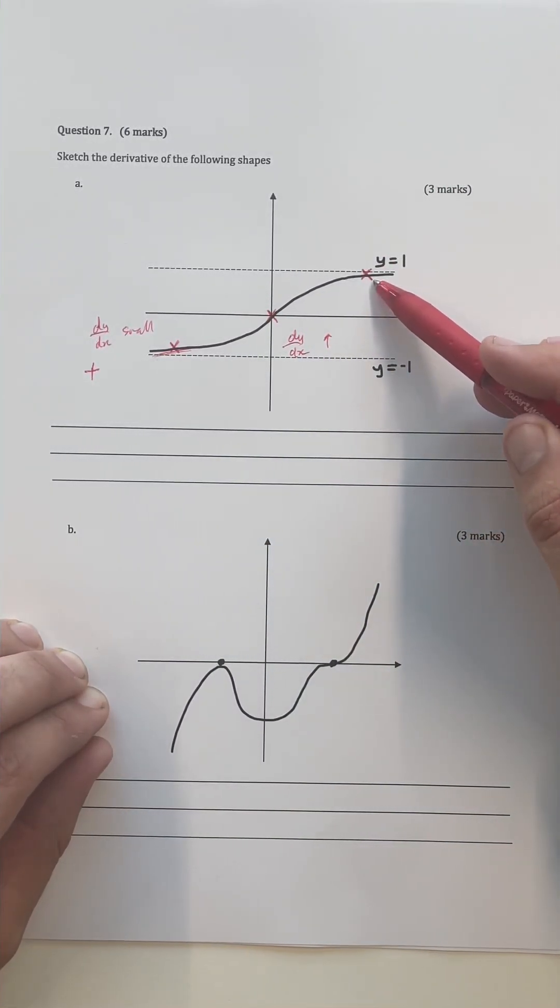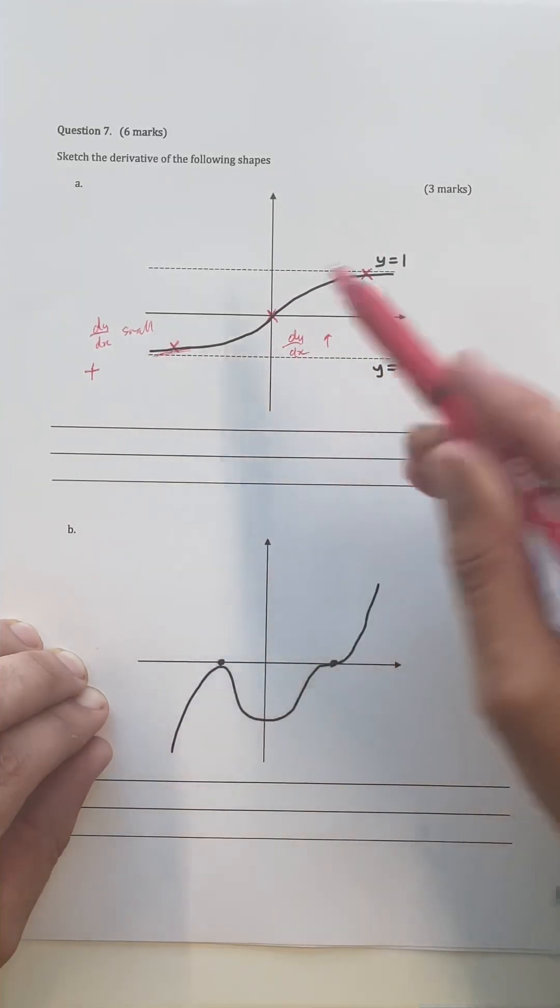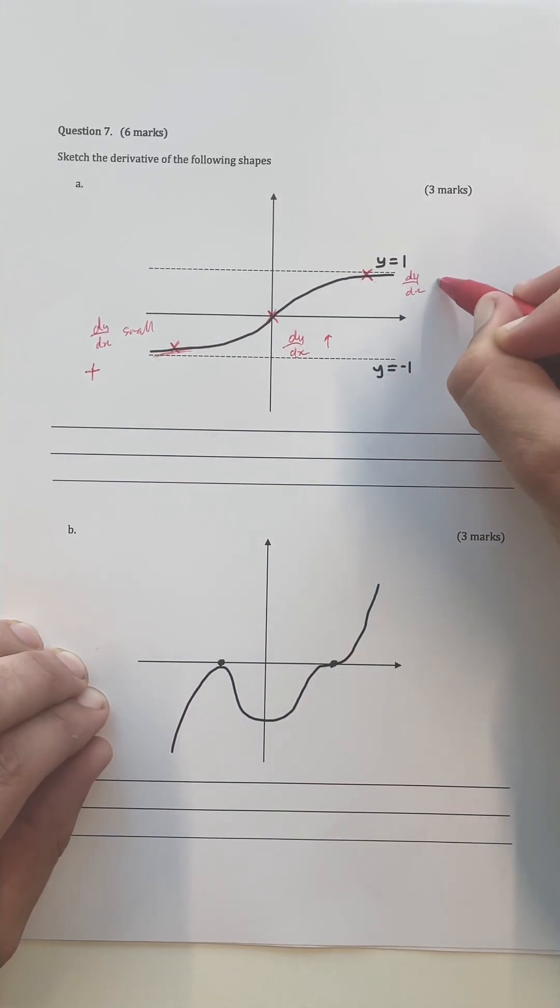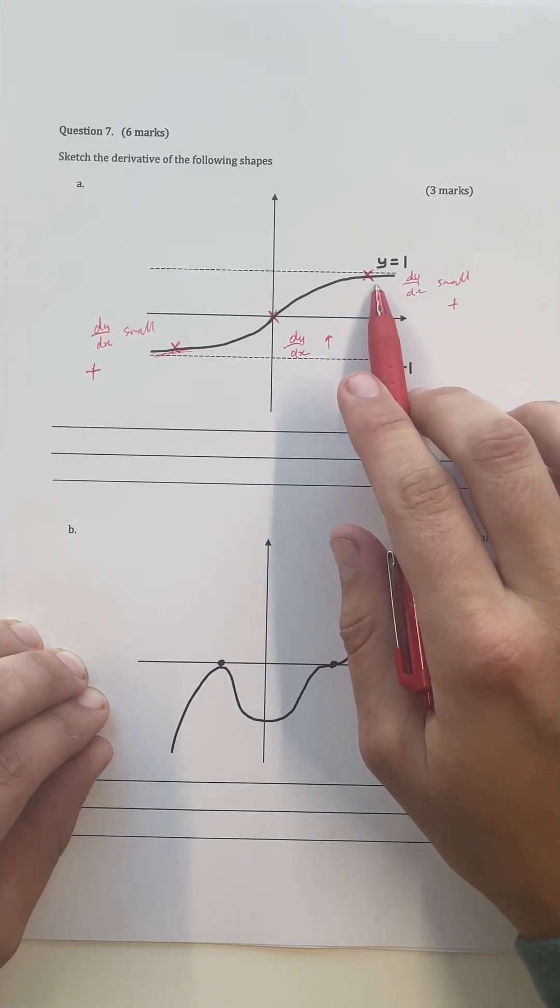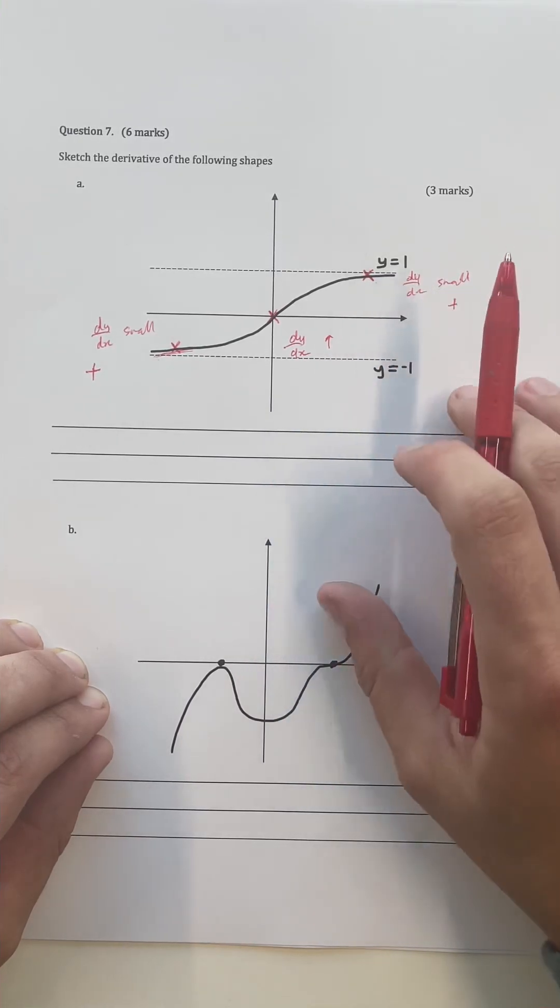Now at this final point here, we have exactly the same features as this starting point here. We have a derivative that's relatively small and it's a positive value, but it's approaching zero because we're tending towards this asymptote now here. So we can say it's a positive small value, but it's going to get smaller and smaller and closer to zero as we go towards positive infinity.